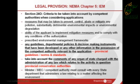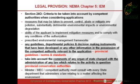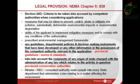This is quite an important section in terms of the criteria that authorities have to consider when reviewing applications. Again, quite generically couched in terms of mitigation measures. Authorities also need to take into account any guidelines, departmental policies, and decision-making instruments that have been developed, or other information in possession of the competent authority. This could relate to the provincial guidelines, norms and standards, or national policies that have been developed. They also have to take into account the comments of any organ of state — and this is often where provincial conservation authorities can come into play with their approach to biodiversity offsets.